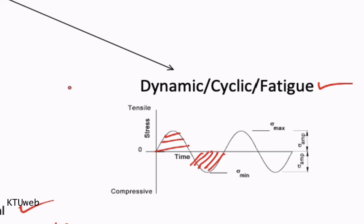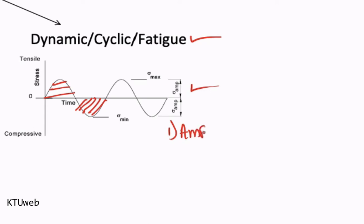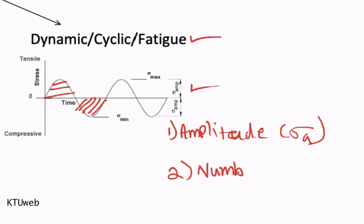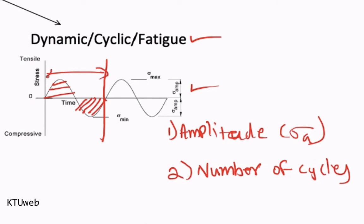The dynamic load situation is pretty much different from the static load situation. Here you have two factors which influence the ability of that stress to cause fatigue failure. The first factor is the amplitude of stress — what we call sigma amplitude. The second factor is the number of cycles. If you consider one stress cycle as a 360-degree cycle, this repeating cycle continuously happens on that material.